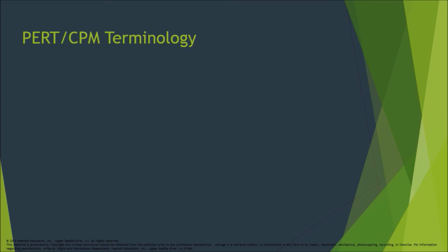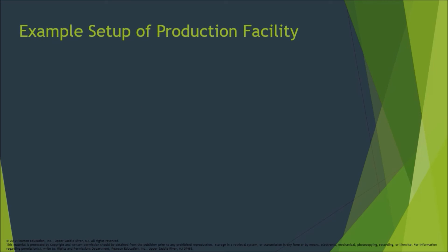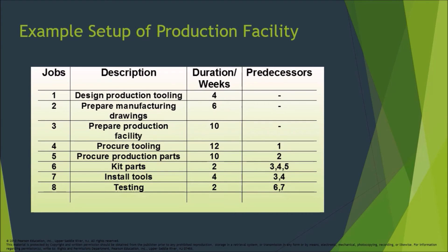PERT/CPM terminology includes Activity, Critical Activity, Path, and Critical Path. An example setup of a production facility: designing production tools is 4 weeks; preparing manufacturing drawings is 6 weeks; preparing production facility is 10 weeks; producing tooling is 12 weeks (predecessor: job 1); producing production parts is 10 weeks (predecessor: job 2); kit parts is 2 weeks (predecessors: jobs 3, 4, and 5); installing tools is 4 weeks (predecessors: jobs 3 and 4); testing is 2 weeks (predecessors: jobs 6 and 7).